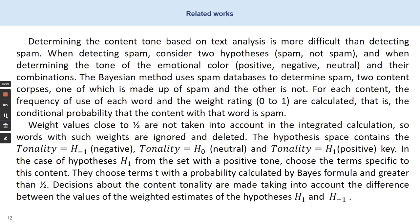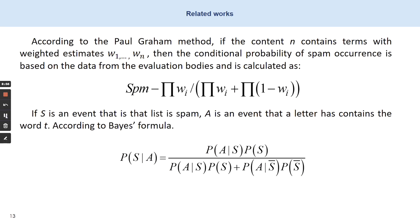The hypothesis space contains the negative, neutral, and positive keys. In the case of hypothesis H1, from the side with a positive tone, terms specific to the content are chosen. Terms are chosen with probability calculated by the bias formula greater than one half. Decisions about content tonality are made taking into account the differences between the values of the weighted estimates of hypothesis H1 and H-1.